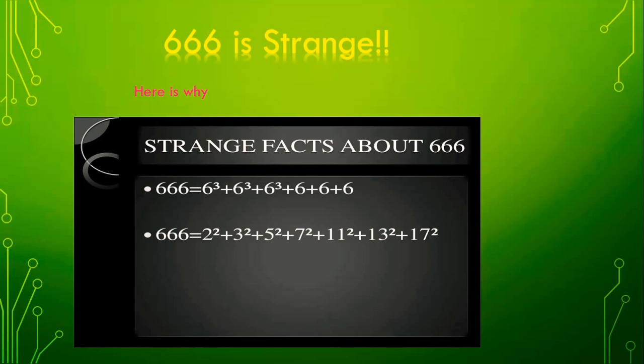Again, 666 is expressed as 2 squared plus 3 squared plus 5 squared plus 7 squared plus 11 squared plus 13 squared plus 17 squared. This is expressed as the sum of the squares of the prime numbers up to 17. So, these are all the amazing facts of the number 666.